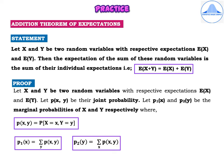The statement is: let x and y be two random variables with respective expectations E(x) and E(y). Then the expectation of the sum of these random variables is the sum of their individual expectations. That is, E(x + y) = E(x) + E(y). The statement carries two marks and the proof will carry three marks.